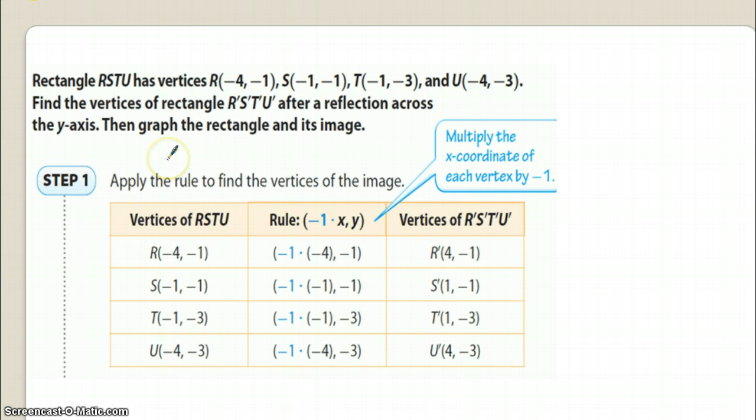Okay, so here's the example that they want us to study before we go to work. It says rectangle RSTU has vertices R(-4, -1), S(-1, -1), T(-1, -3), and U(-4, -3). So it asks us to find the vertices of R prime, S prime, T prime, and U prime after a reflection across the y-axis.